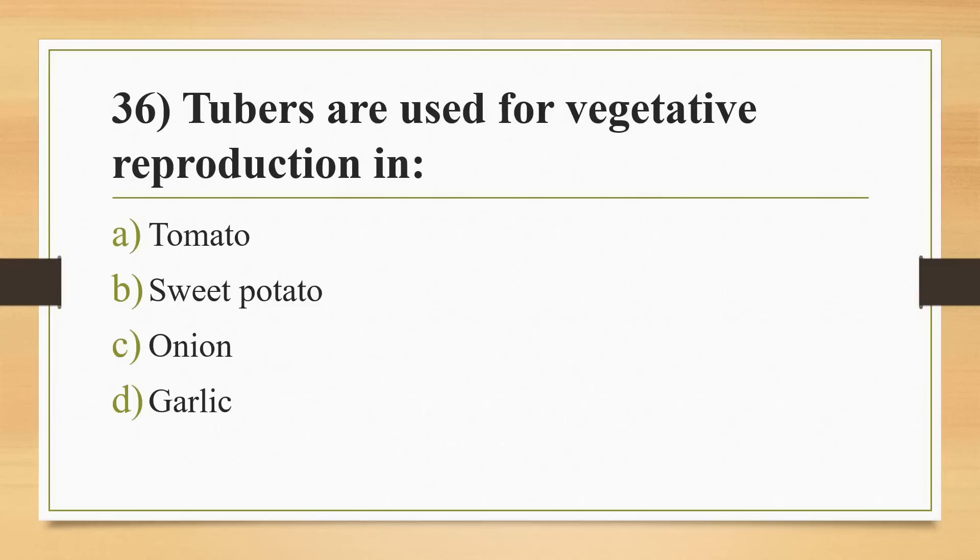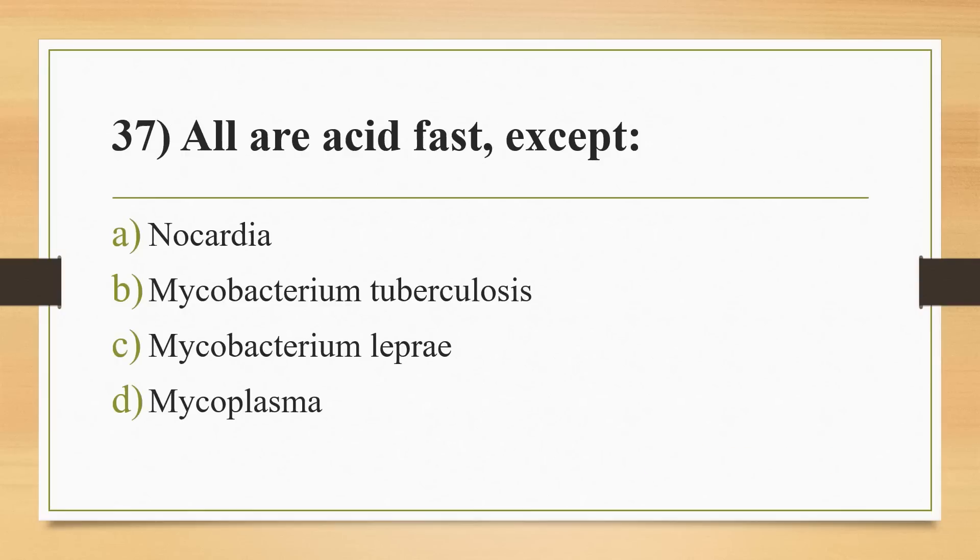Thirty-sixth question: tubers are used for vegetative reproduction in? Options: tomato, sweet potato, onion, or garlic. Answer is Option B, sweet potato. Thirty-seventh question: all are acid-fast except? Options: Nocardia, Mycobacterium tuberculosis, Mycobacterium leprae, or Mycoplasma. Answer is Option D, Mycoplasma.